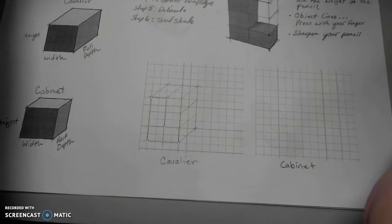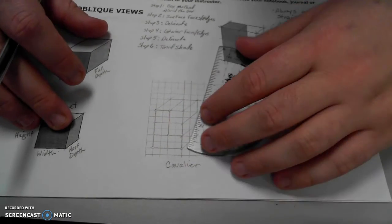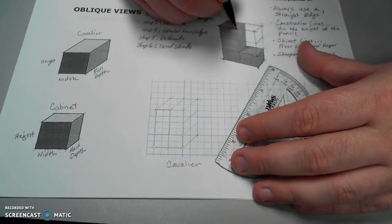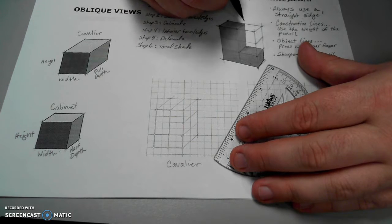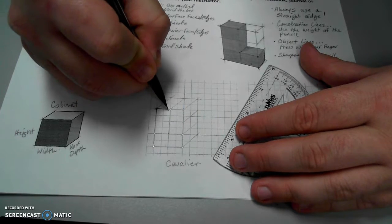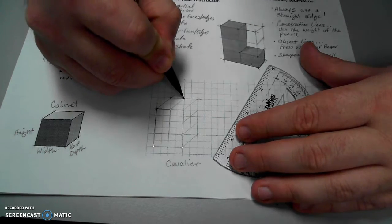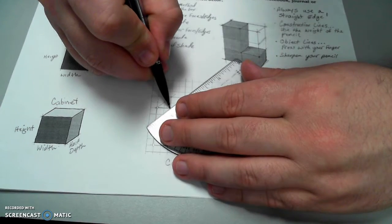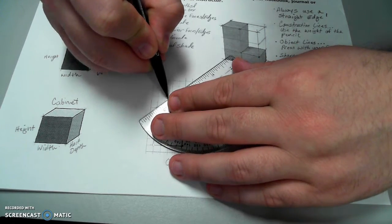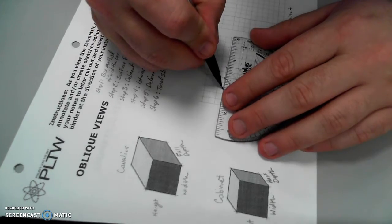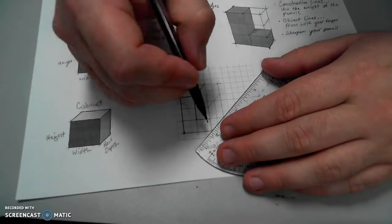I'll do the same thing repeating for the top and the right side faces. Starting at these two points here, I'll go back to here and here. These two points, I'll go back to these. This is my top face. Delineating them as I go.